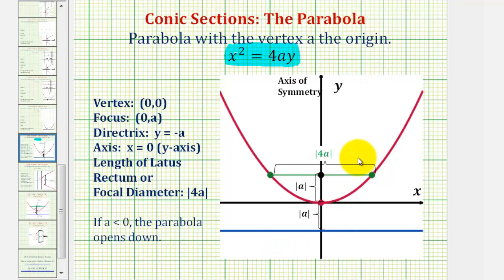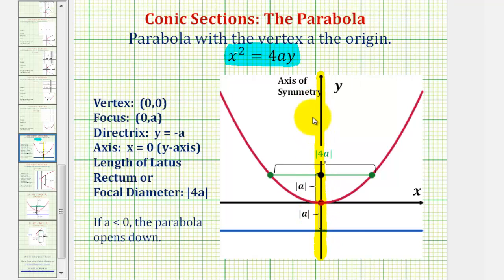If we take a look at our graph for a moment, if the parabola opens up or down and the vertex is at the origin, the y-axis will be the axis of symmetry, which has the equation x equals zero. The parabola is symmetrical across this line — we can think of it as cutting the parabola in half, or if we fold the parabola across this line, it would match up perfectly with the other half.